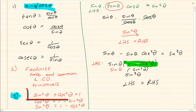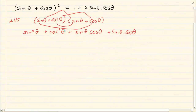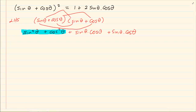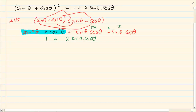And then the second cross-term gives plus sin theta cos theta. Now sin squared plus cos squared equals 1. When doing identities, you are always trying to reduce — going from two terms to one term. So sin squared plus cos squared becomes 1, and then sin theta cos theta plus sin theta cos theta is like 1x plus 1x, which gives 2x. So we end up with 1 plus 2 sin theta cos theta. Left hand side equals right hand side.